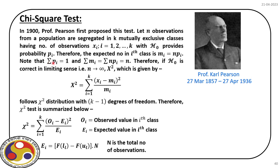If the null hypothesis is correct, in the limiting sense as n tends to infinity, the variable χ² from the observations is given by χ² = Σᵢ₌₁ᵏ (xᵢ - mᵢ)²/mᵢ, where xᵢ is the observed count and mᵢ is the expected count in the i-th class based on our model. This follows a chi-square distribution with k - 1 degrees of freedom.